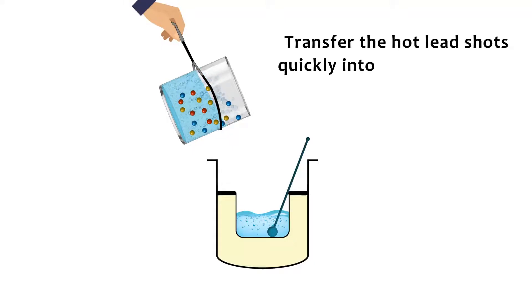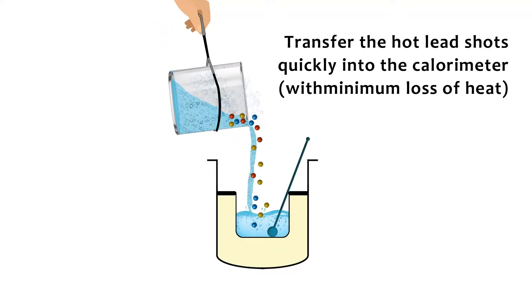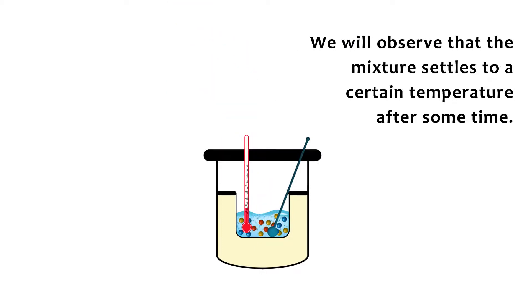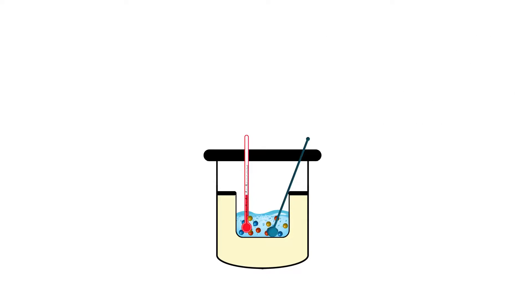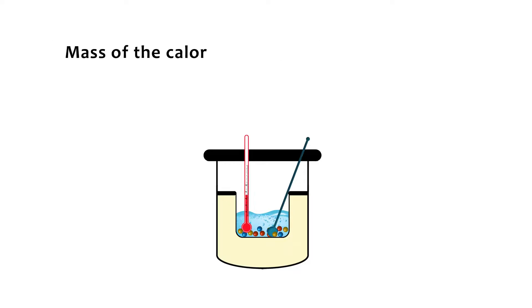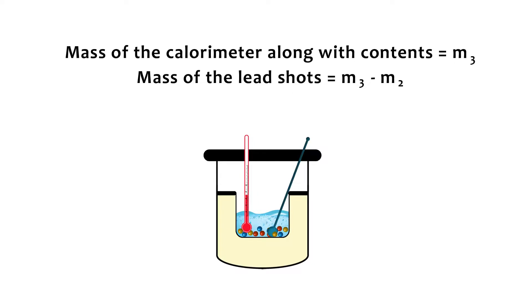Transfer the hot lead shots quickly into the calorimeter with minimum loss of heat. We will observe that the mixture settles to a certain temperature after some time. Measure this temperature T3 and the mass of the calorimeter along with contents. Mass of the calorimeter along with the contents is equal to M3. Mass of the lead shots is equal to M3 minus M2.